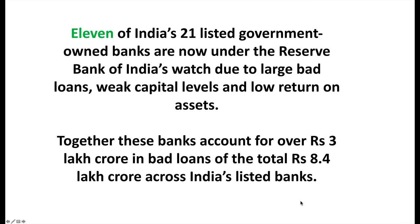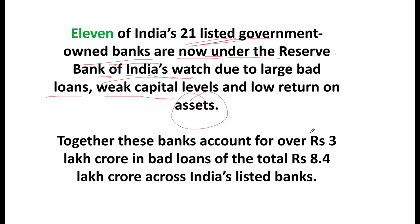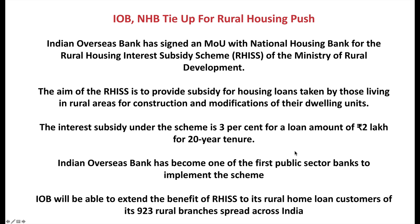Loans above 250 crore will undergo special monitoring. Eleven of India's 21 listed government-owned banks are now under the Reserve Bank of India's watch due to large bad loans, weak capital levels, and low return on assets. Together, these banks account for over 3 lakh crore in bad loans out of the total 8.4 lakh crore — though this figure has now grown to around 12 lakh crore.